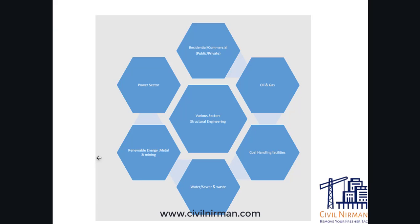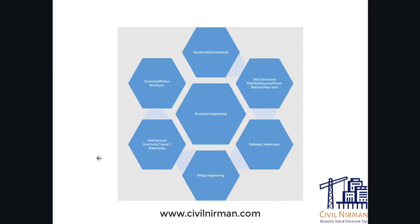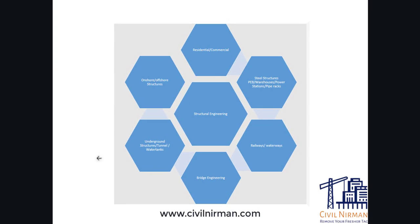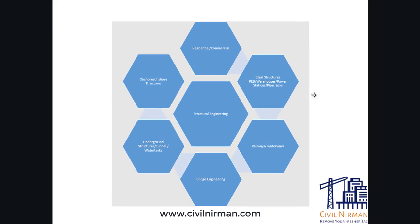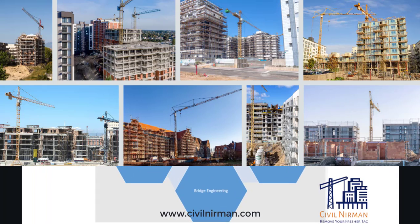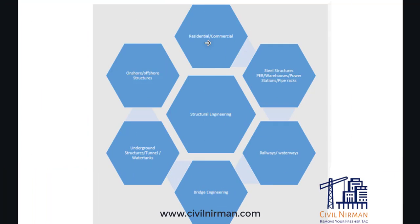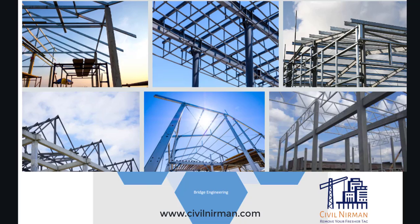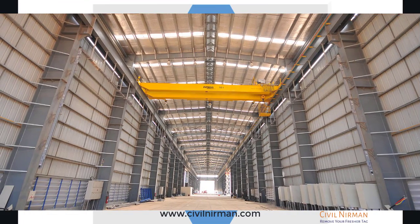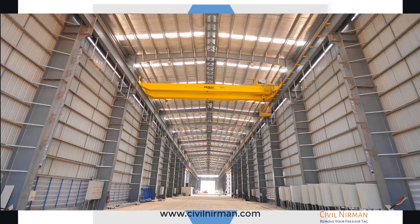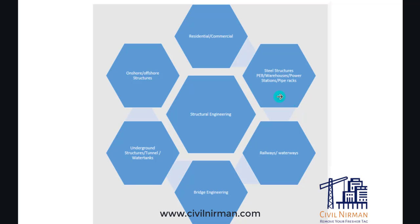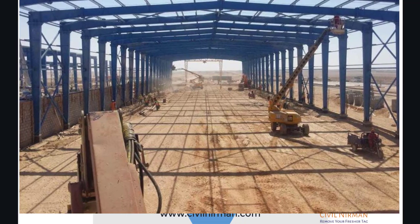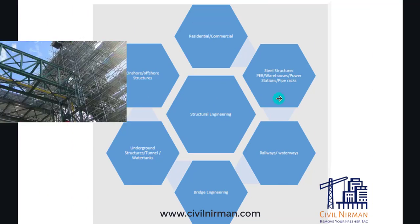Let's understand different categories of structures we can design as a structural engineer. The most common ones are residential and commercial buildings, and steel structures such as factories and warehouses. These are the two most common categories. Then come pre-engineering building structures, warehouses, pipe racks, and power stations.